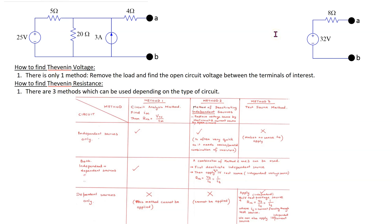In this video we will look at how to use LTSPICE to find the Thevenin voltage and Thevenin resistance. Recall that the Thevenin voltage is the open circuit voltage between the terminals of interest. The Thevenin resistance can be found using three different methods depending upon the circuit elements. For circuits containing independent sources only, or circuits containing both independent and dependent sources, we can use LTSPICE to directly find the open circuit voltage and also the short circuit current.